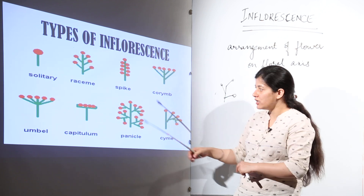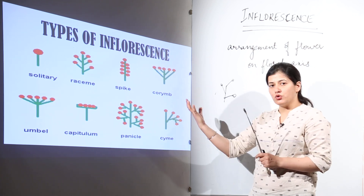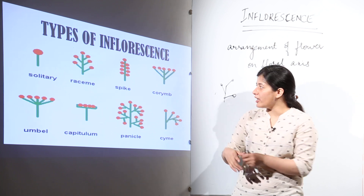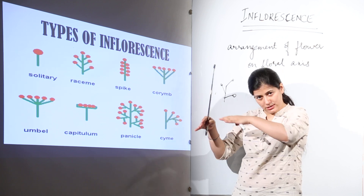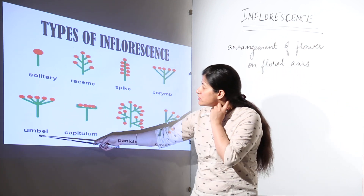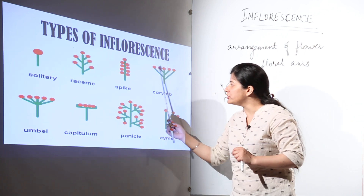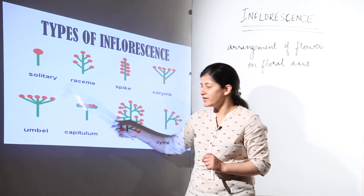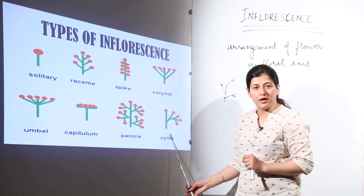In spike, two flowers originate from the same point towards both sides. Then we have corymb — all the flowers raise up to a common level, and the flower looks larger in size as if it is one common flower, but these are different small flowers which have risen to a uniform level giving the appearance of a common flower. Same is the case with umbel, but the difference is all flowers originate from one point and then reach up to a common level. Then we have capitulum, panicle, and cymose inflorescence.